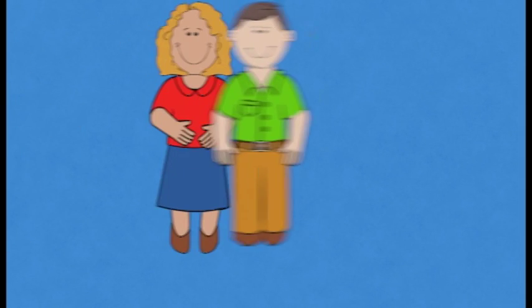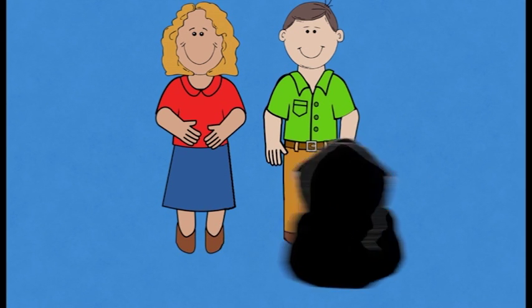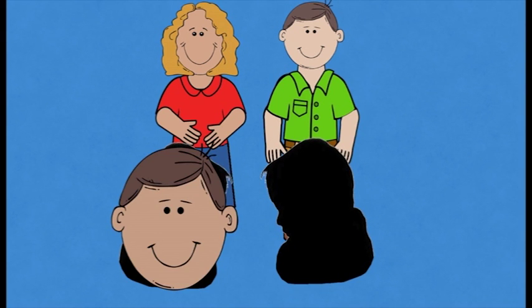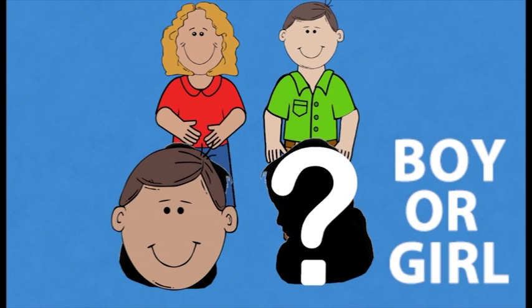This paradox is a story of a family with two children. One of them is a boy. But what is the probability of the other child also being a boy?